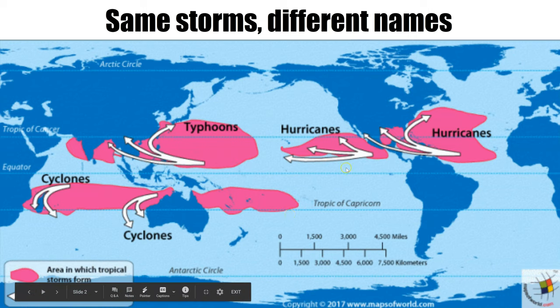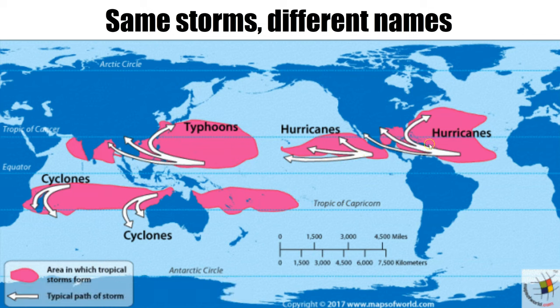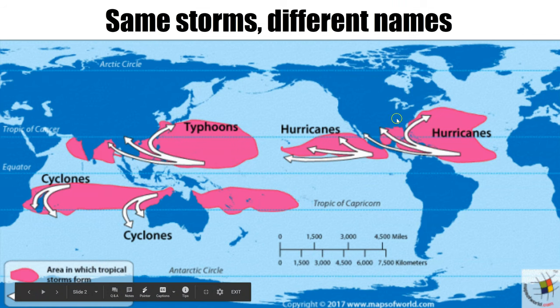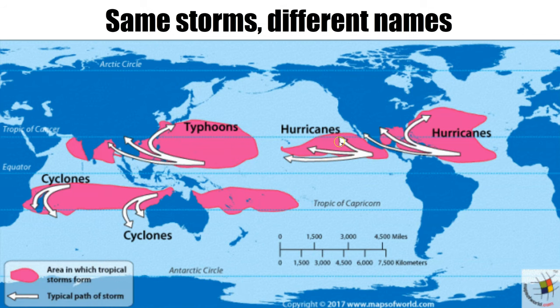When they form over the Atlantic heading towards America, they're called hurricanes. Similarly, off the west coast of central America. Come over to the western Pacific Ocean and they're called typhoons — so if they hit Japan or the Philippines, they're called typhoons. Come further down to Australia and the Indian Ocean and they're called cyclones. They're exactly the same storm, just different names.